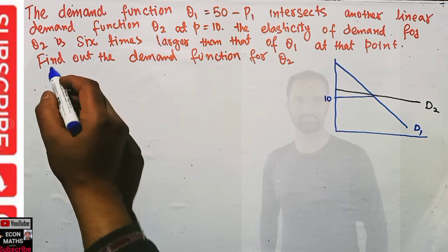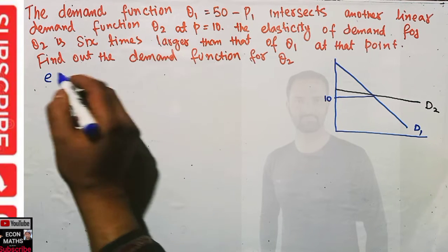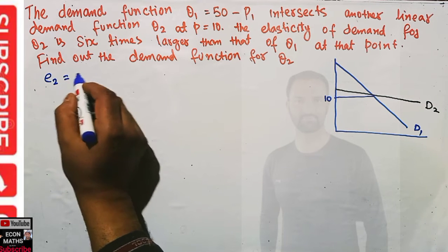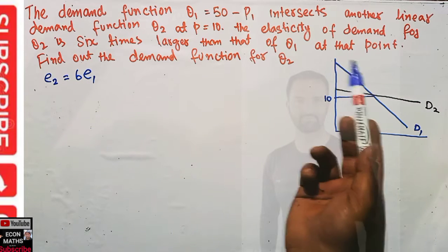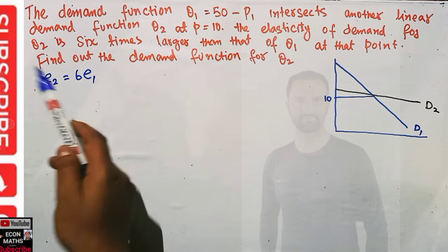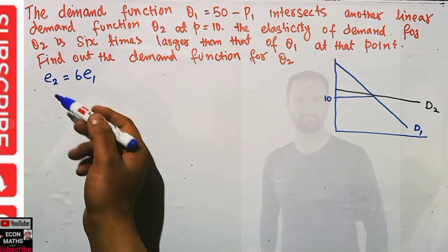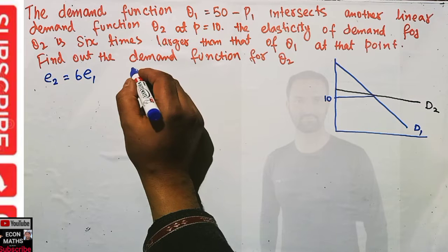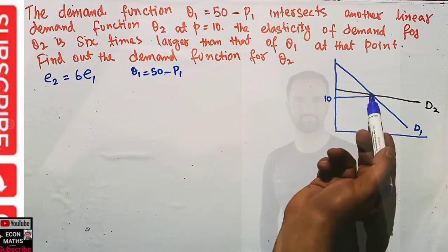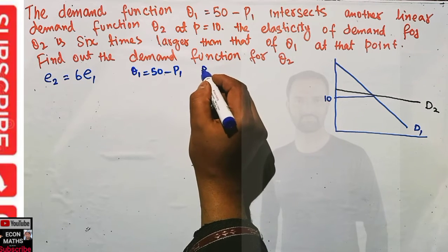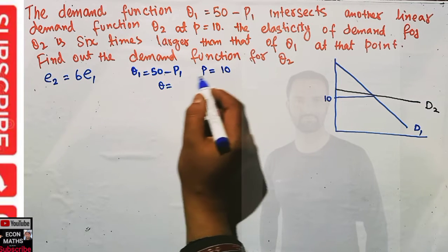Let us denote elasticity of demand for q2 as e2, which is equal to six times the elasticity of demand for q1. So demand function two is six times more elastic than q1. The demand function for q1 is given as q1 = 50 minus p1. Also at the intersection point, p is equal to 10.